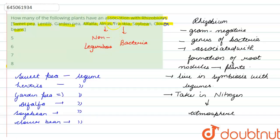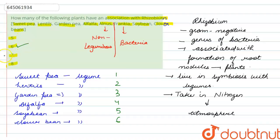Alnus and frankia do not belong to this category — they live in association with each other. So, in the question asking how many plants have an association with Rhizobium, we can count: one, two, three, four, five, and six. So option five is incorrect, and option six is the correct answer. Six plants are associated with Rhizobium, as all six belong to the leguminous family. I hope I have solved the question. Thank you.